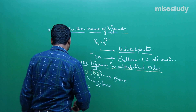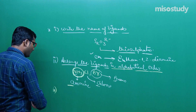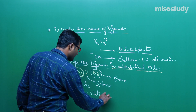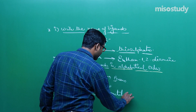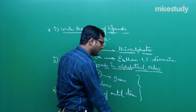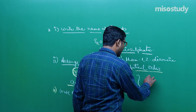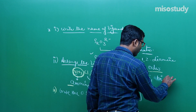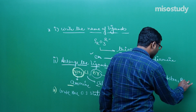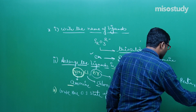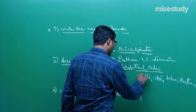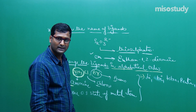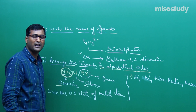Third rule: we have to write the oxidation state of the metal atom. If there are 2, 3, 4, 5 ligands, then we say di, tri — for 4 that is tetra, for 5 that is penta, hexa, and so on.